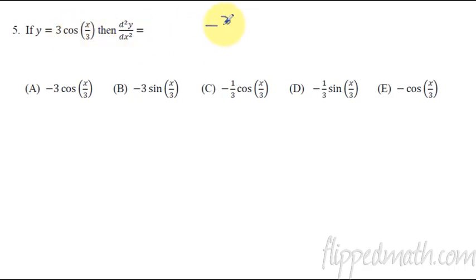But derivative of cosine, remember, is negative sine. So I'm going to have a negative 3 sine of X over 3. And then times the derivative of the inside here would be a 1 third. So then you can simplify this up. The 1 third and the 3 will cancel each other. So you have negative sine of X over 3. And then you take the derivative one more time, and you'll have your answer.